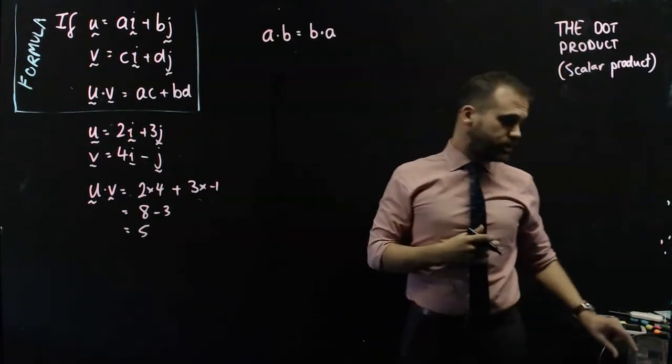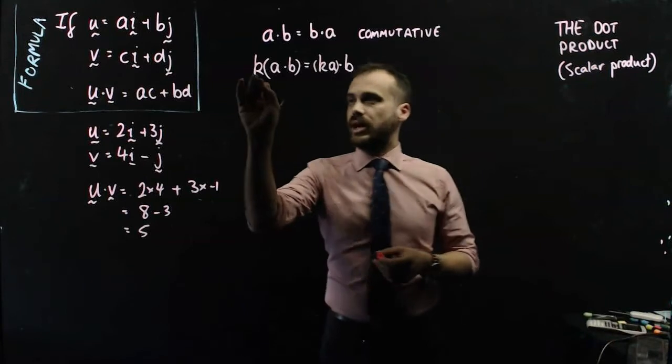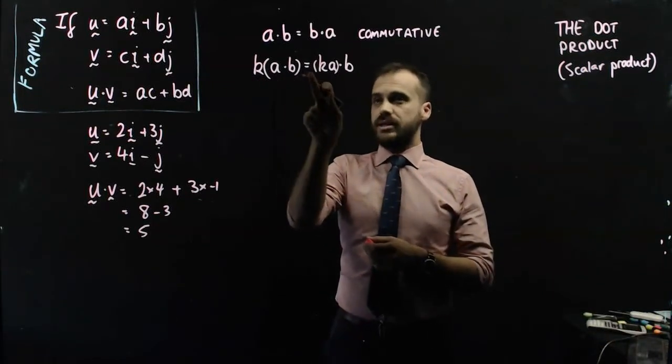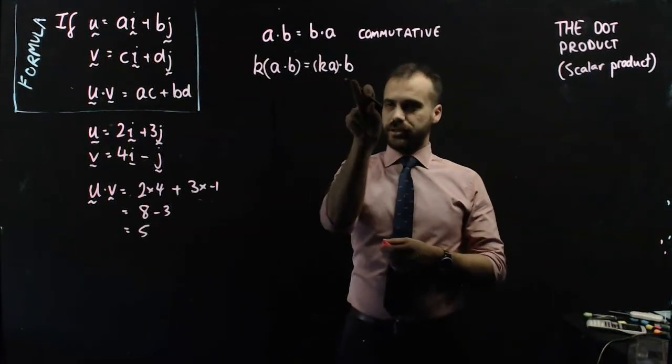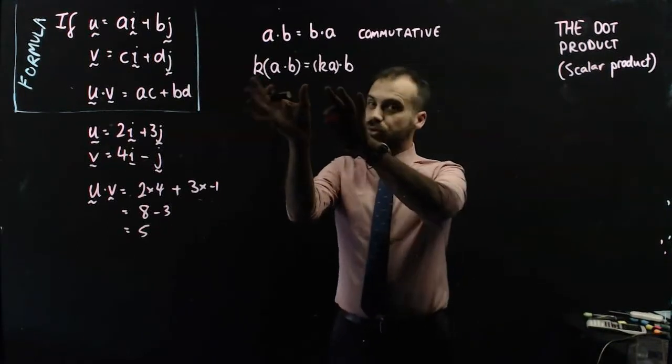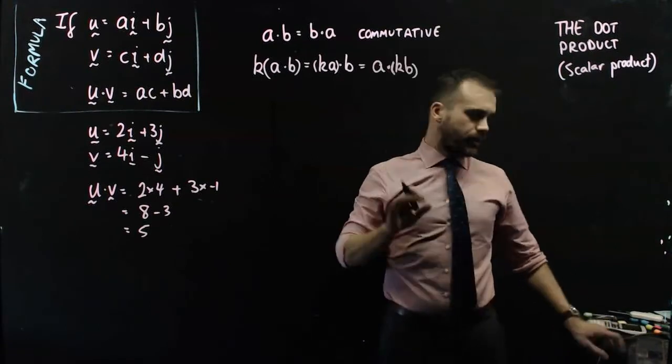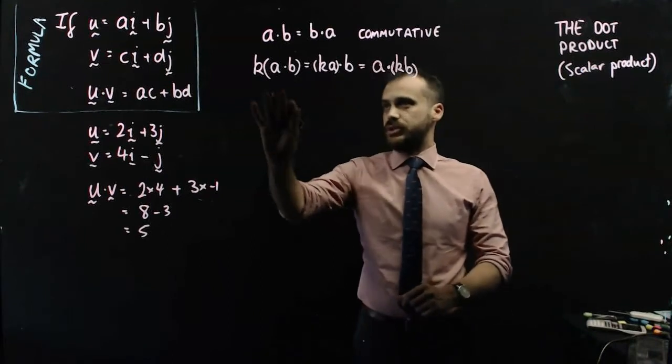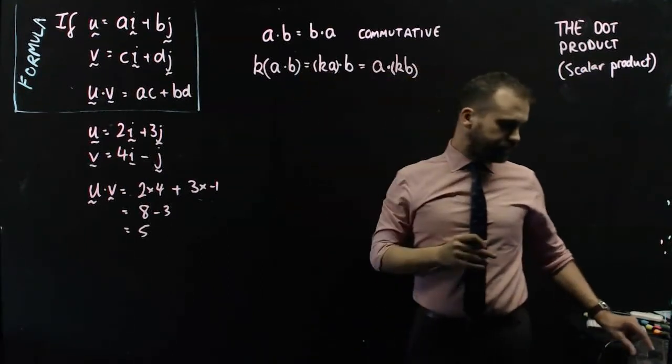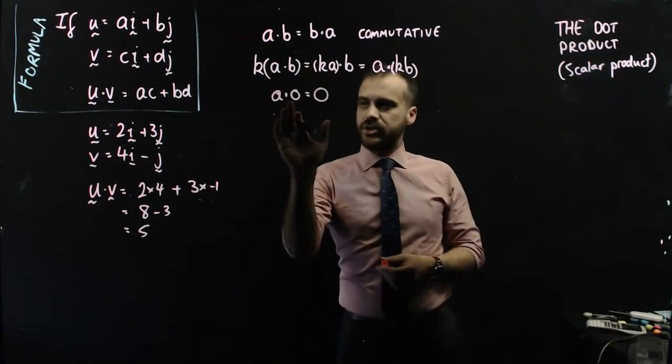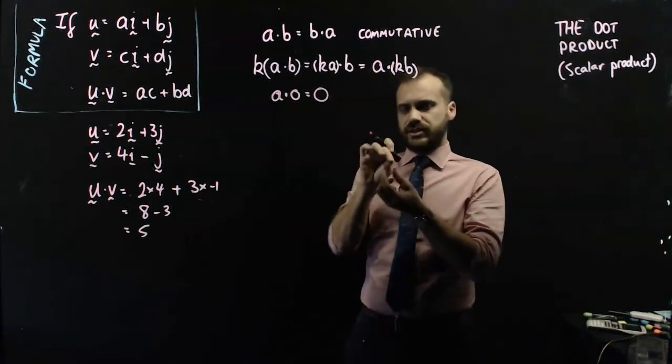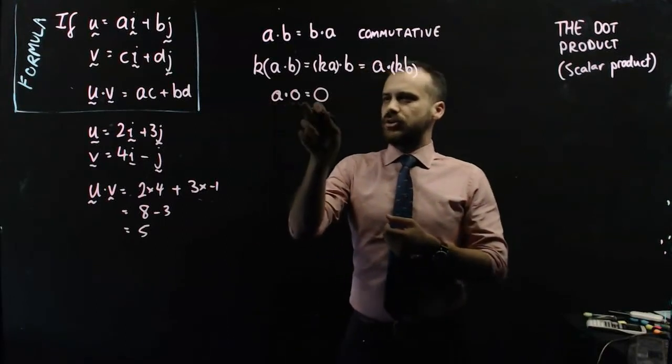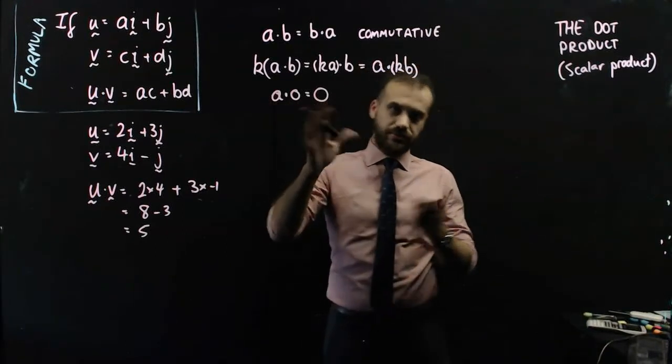We can also say that k times the dot product of a and b is equal to k times a dot product b. So those are equivalent as well. And we can also say that a dot kb is the same as that, which is the same as that. We can say that a dot zero, zero is like a zero vector, it's a vector with zero length. We can say that a dot zero is equal to zero, that makes sense.